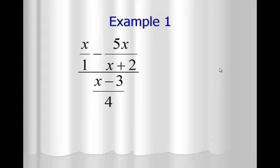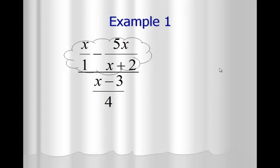In this problem we have two fractions being subtracted and then we're dividing by another fraction. The first thing we want to do is cloud the two fractions that are being added or subtracted, because this process requires us to find a common denominator. On the x over 1 minus 5x over x plus 2 part, the common denominator is 1 times x plus 2, which is just x plus 2.